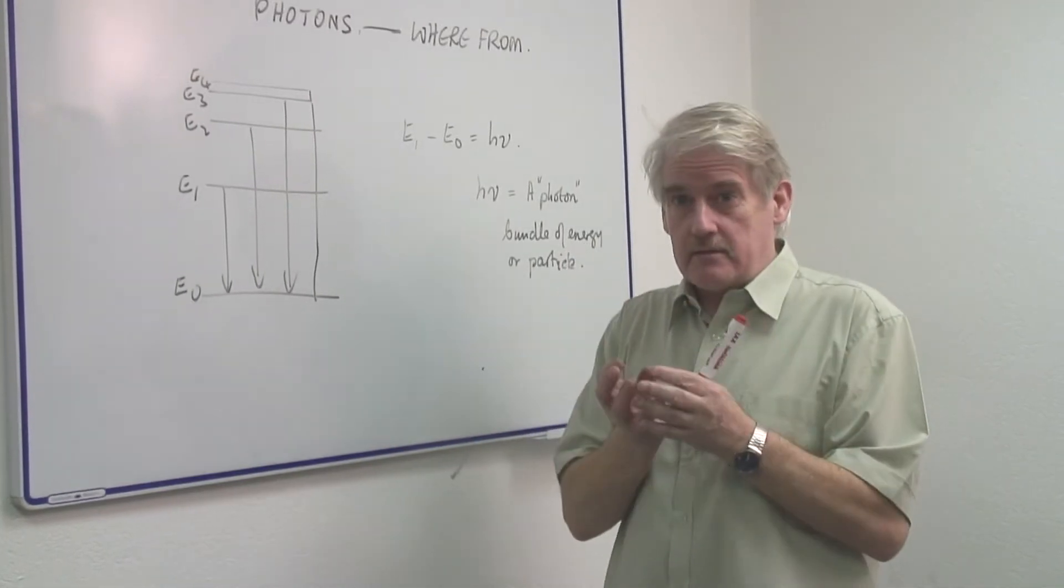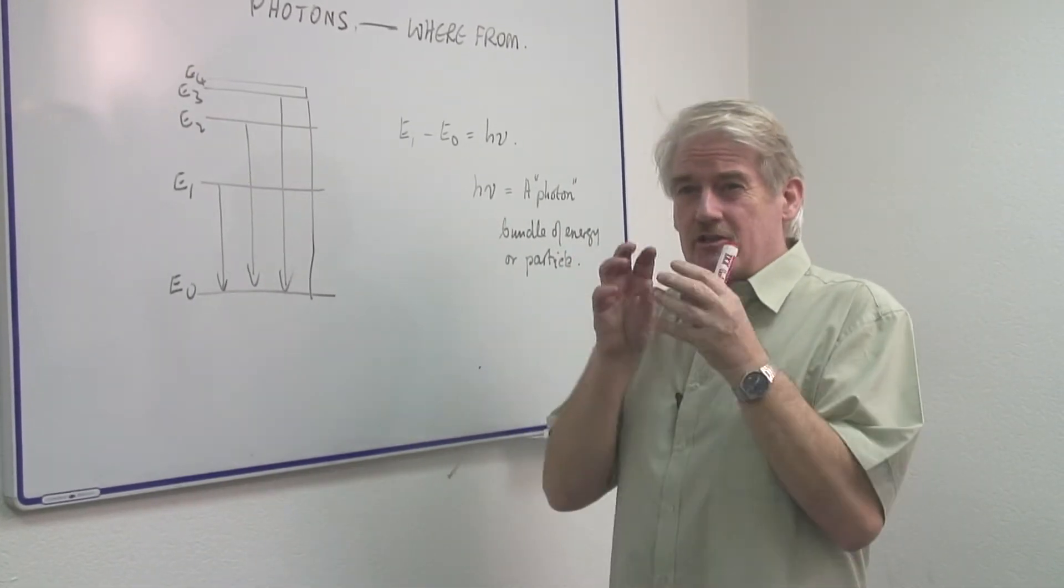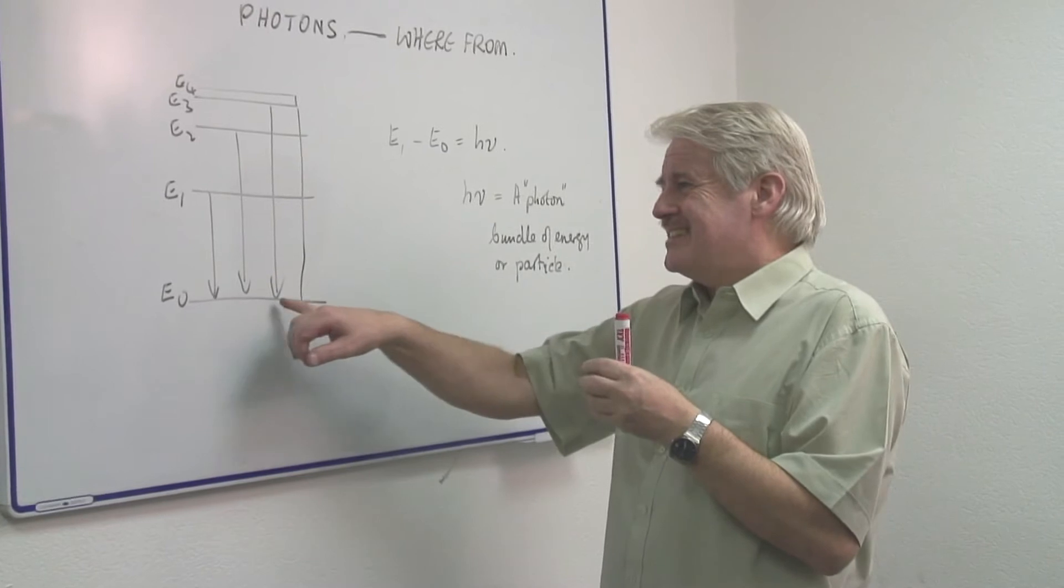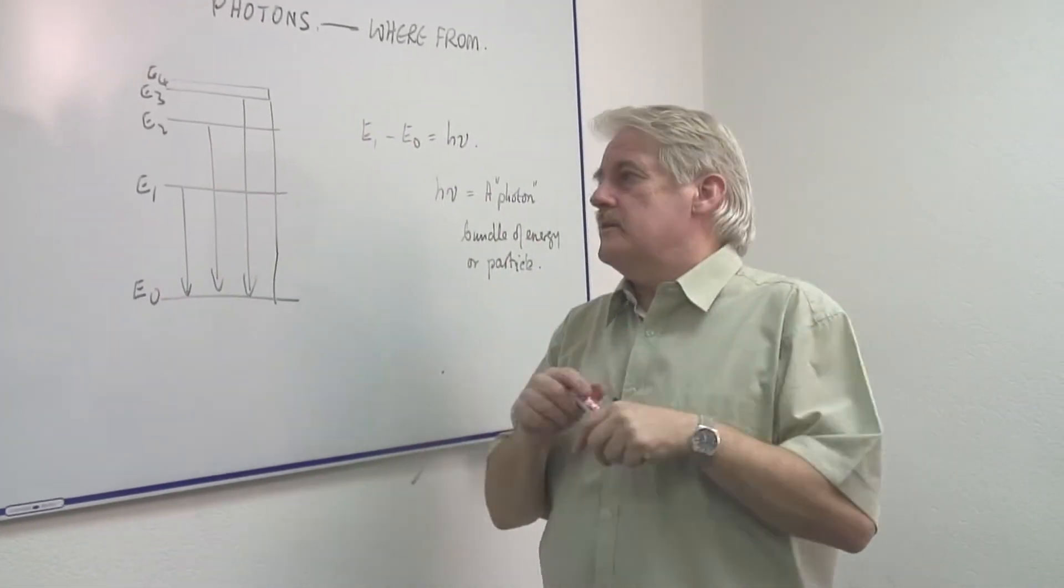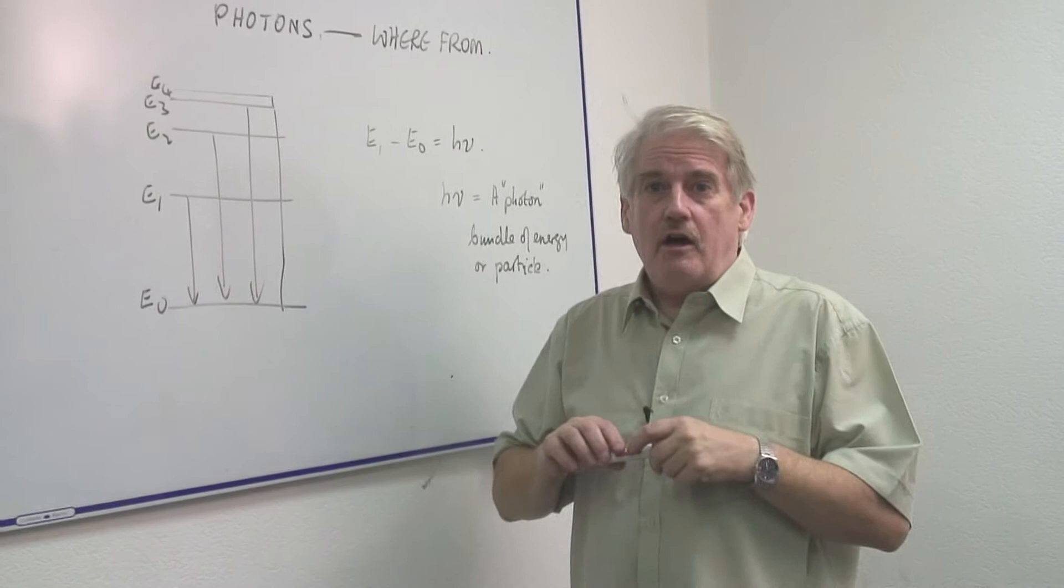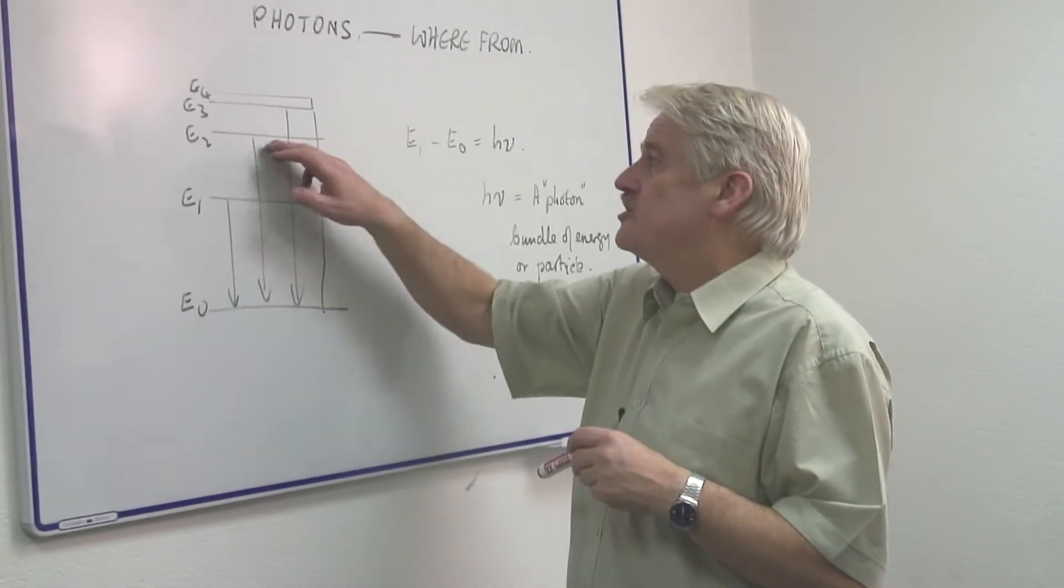So you can imagine you've got an atom with a nucleus, but it's not the nucleus we're interested in, it's the electrons which are flying around it. And these electrons are allowed to have certain energy levels.